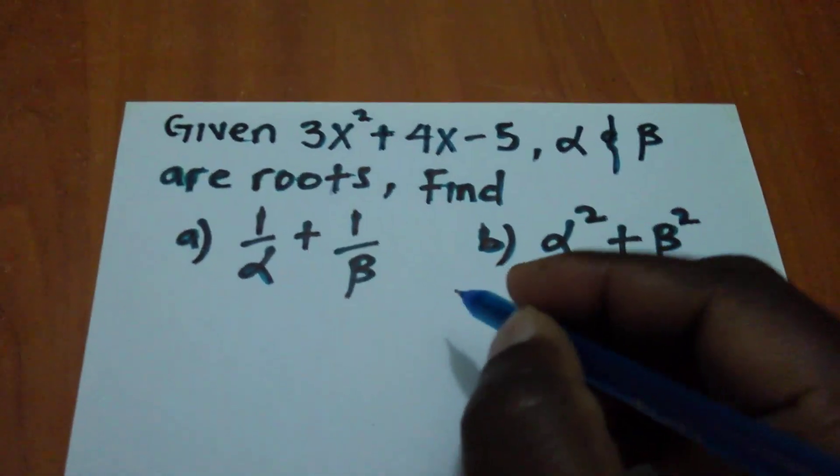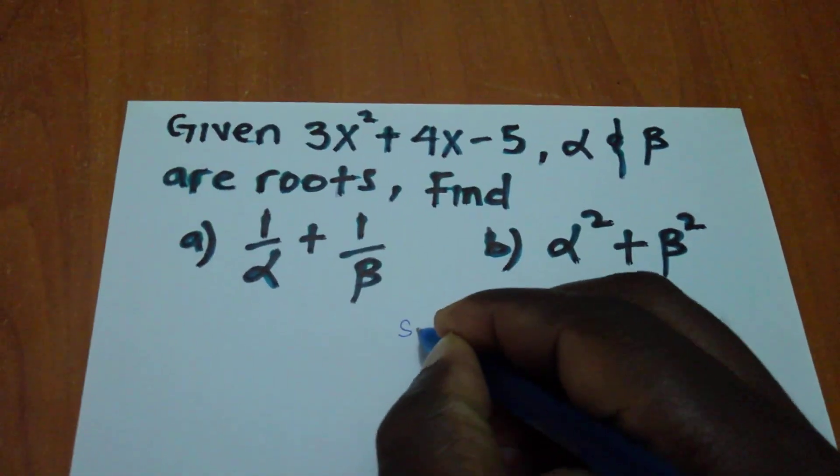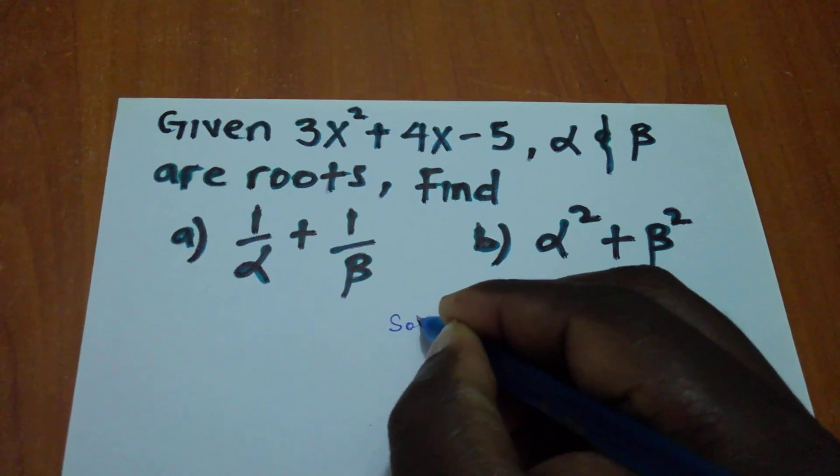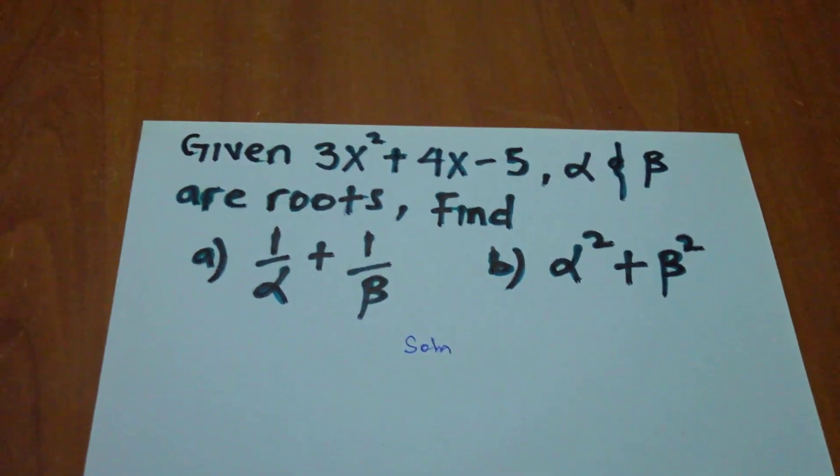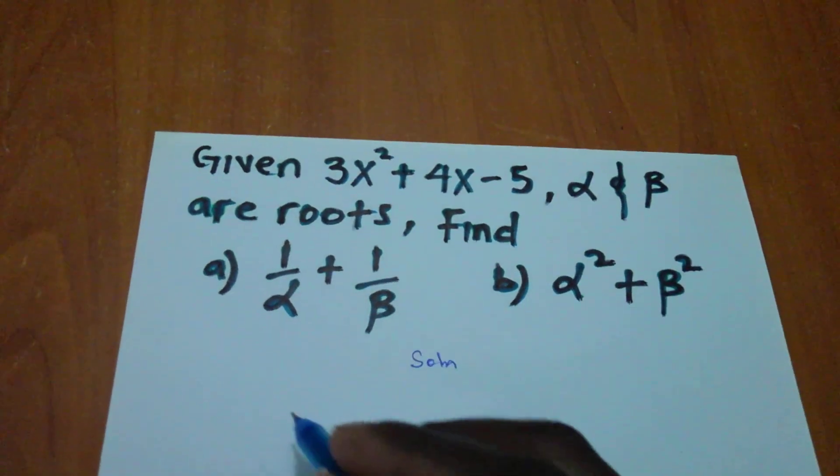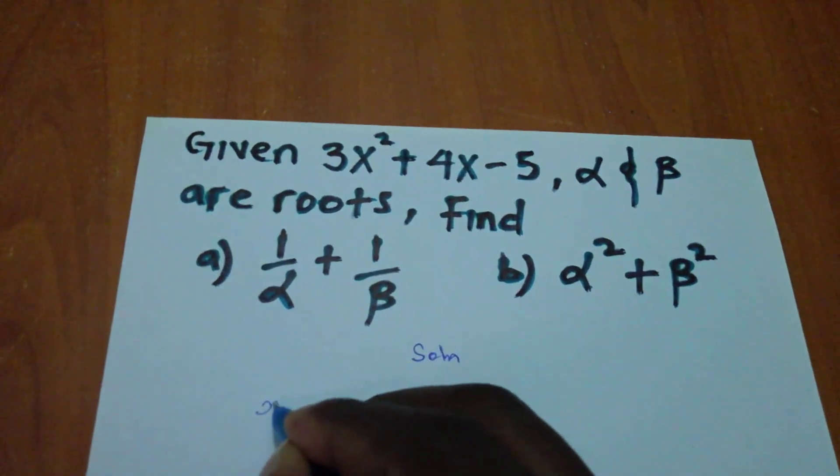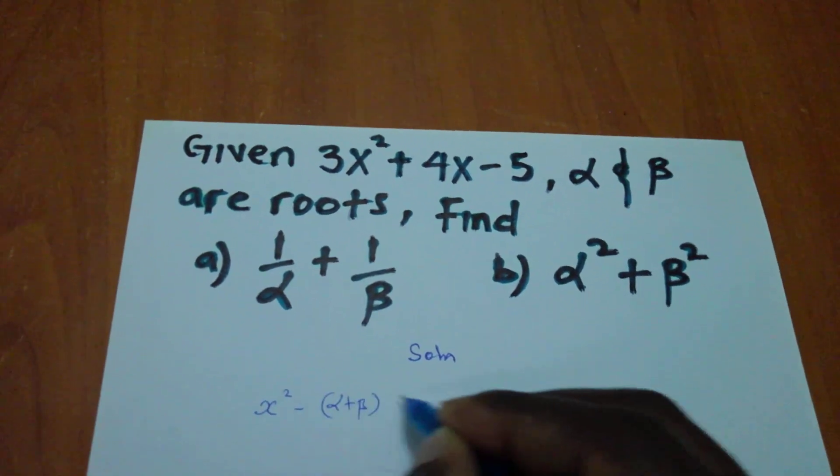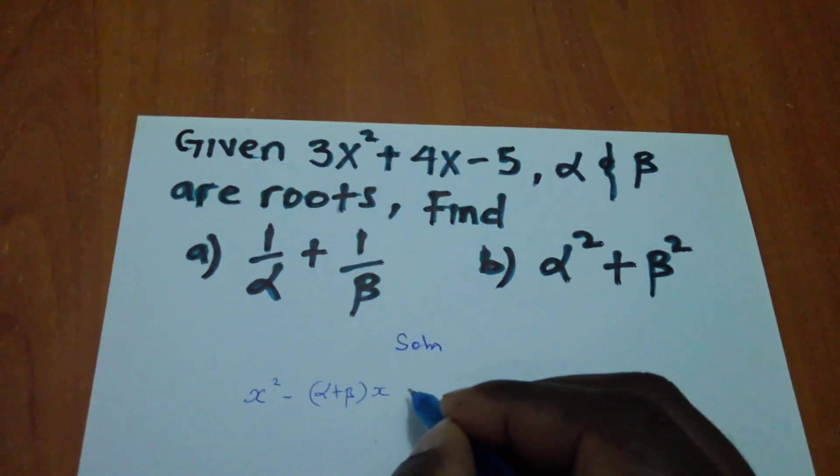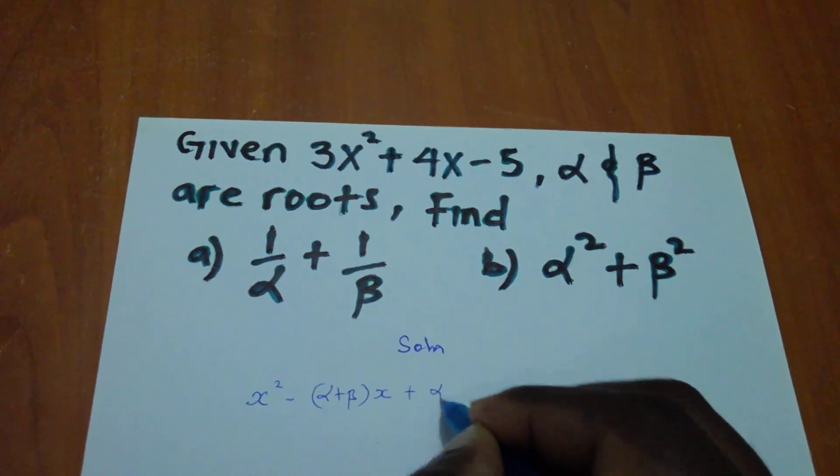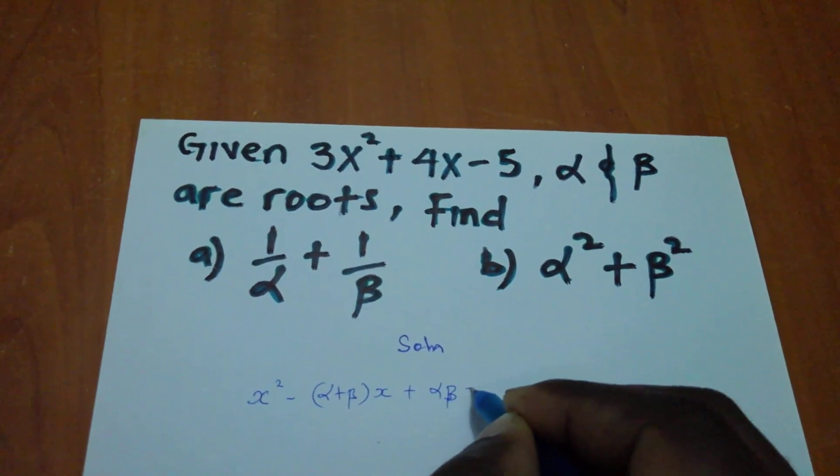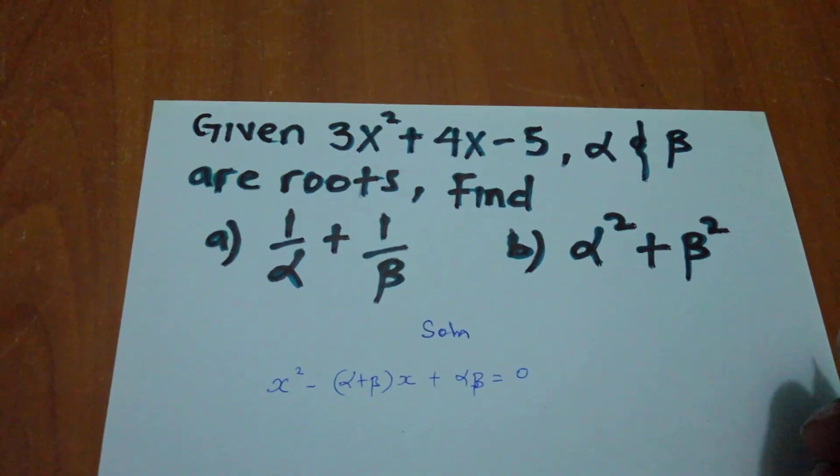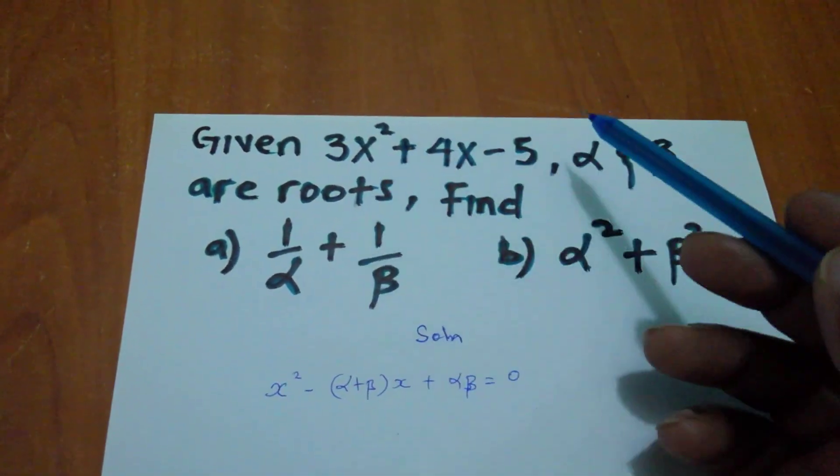Solution: How do I start? From the original equation which is x² - (α + β)x + αβ = 0. Now, from this original equation, that's where I have to derive my sum and products.